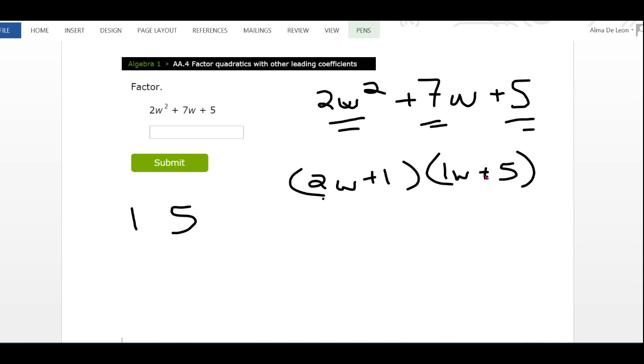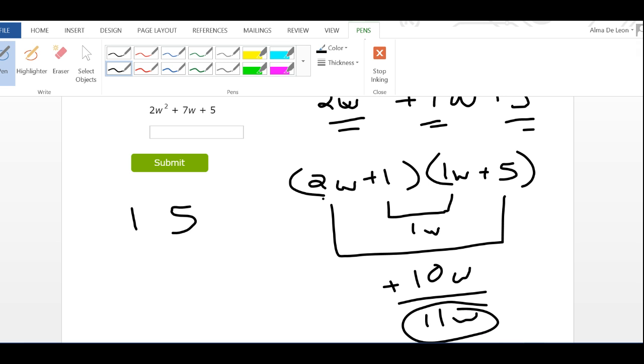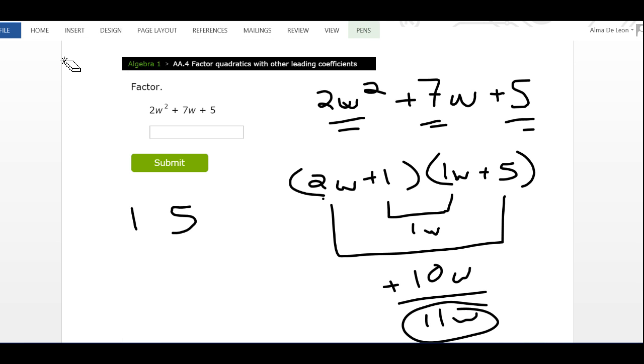Now if this is true, when I multiply the inside and outside of my parentheses, those numbers should add up to give me 7w. 1 times 1w is 1w, 2w times 5 is 10w. If I add those, I end up with 11w. That's not what I want. I want 7w, not 11w, so that doesn't work.